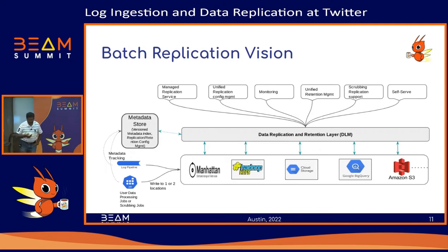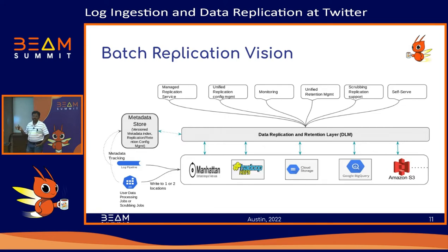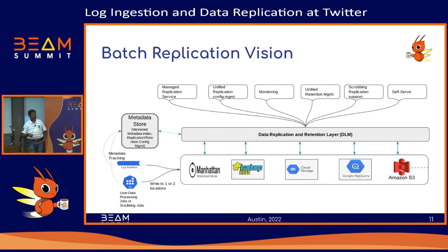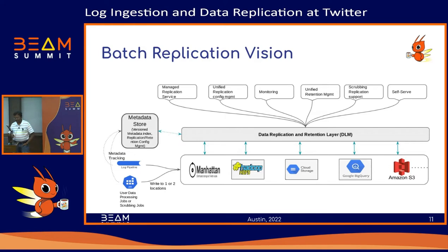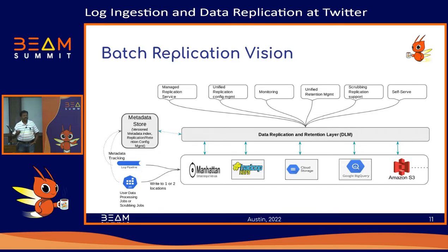The unified story has underlying storage systems at the bottom layer. We want to design a replication and retention layer on top that listens to the metadata layer and performs replication. This replication layer is a managed service with production SLOs. Customers define the quality of service and provision replication via simple CLI or GUI, with unified dataset-level monitoring showing metrics, data volume, chargeback, and automatic scrubbing synchronization across locations.